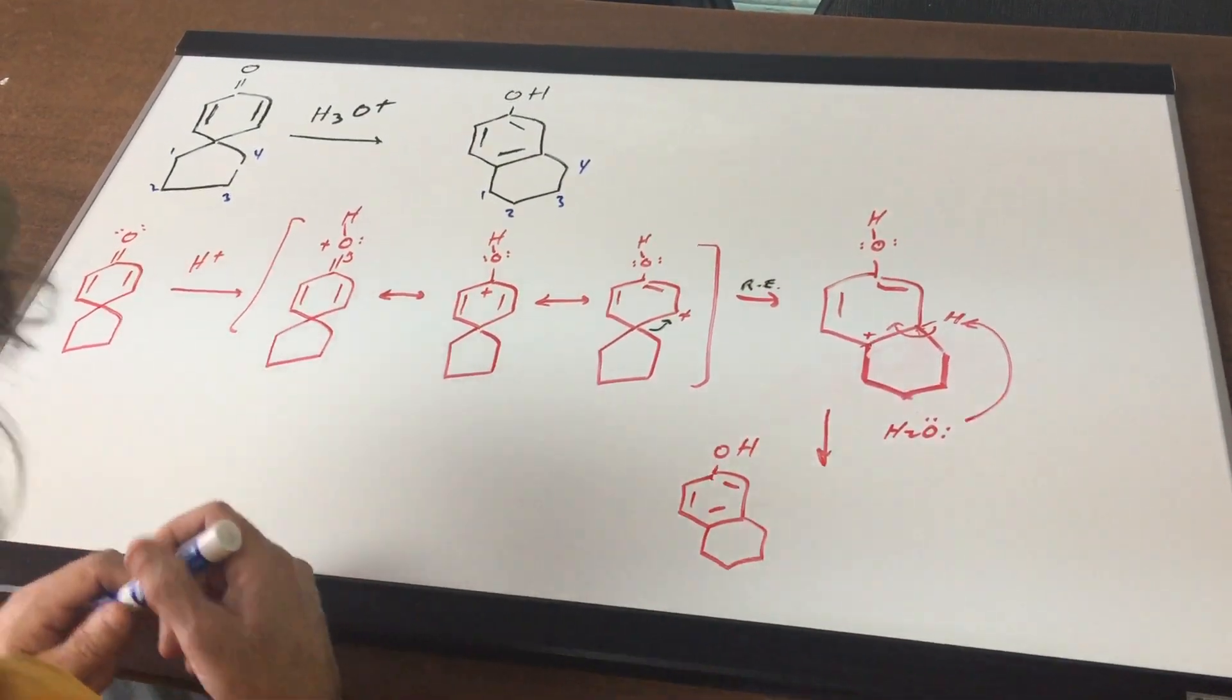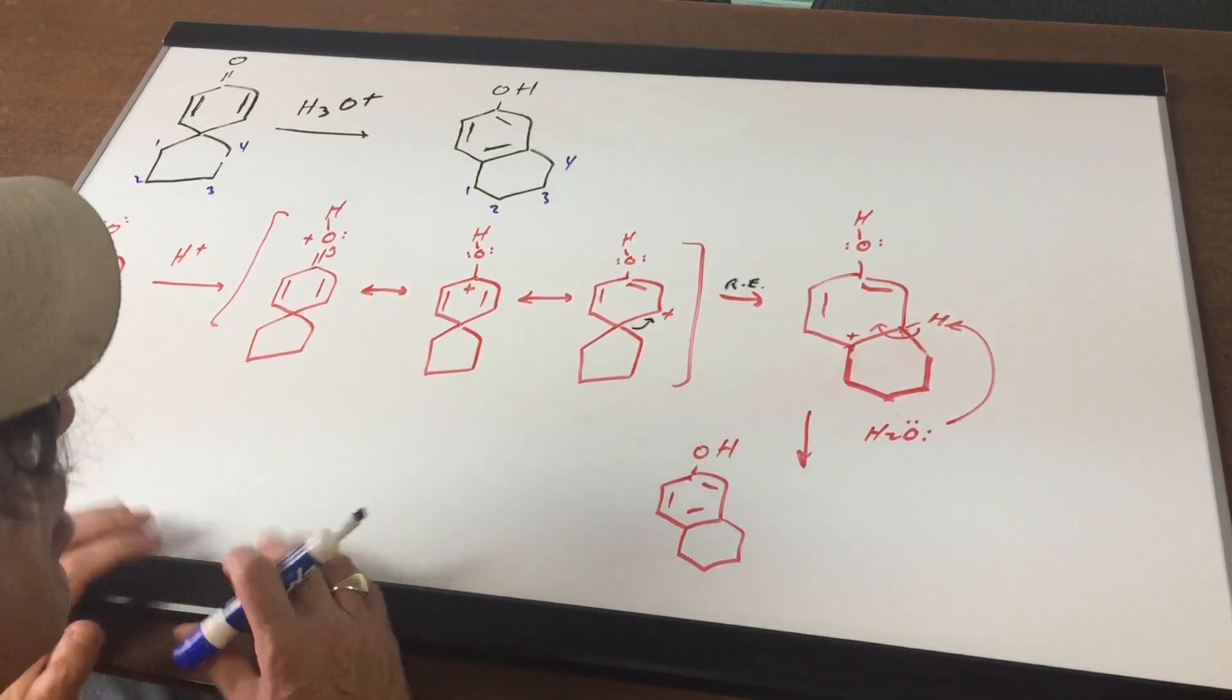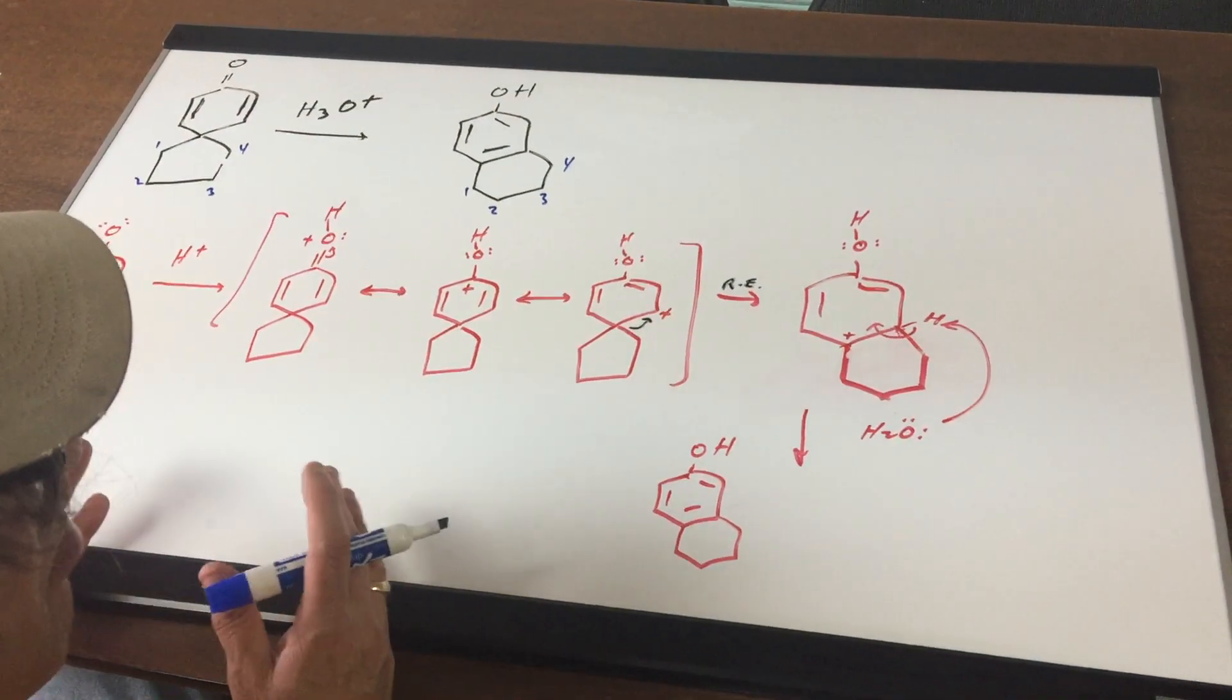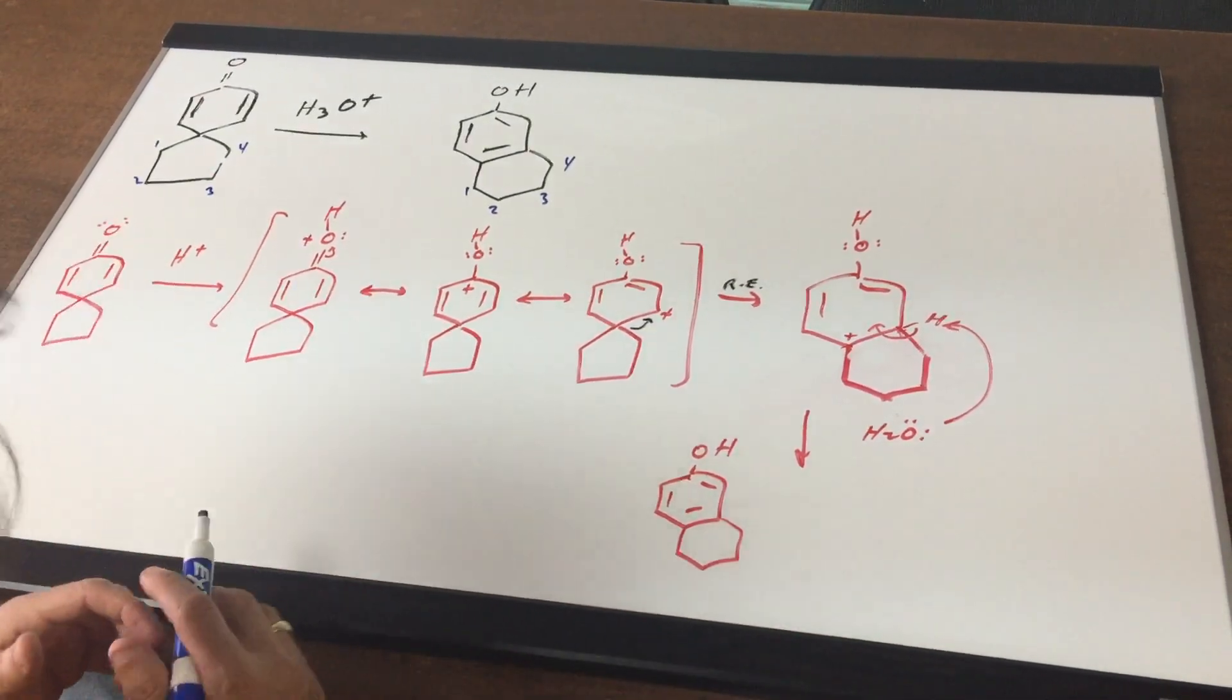Well what would be my first move? Now for the DAT exam you're not required to come up with mechanisms but you do need to understand how arrows move. So I think this problem will just give you a good idea and a good feel for problems.